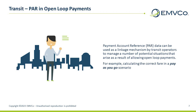Without the PAR data, the transit system would need to utilize other proprietary systems and processes to link the PAN provided at entry to the payment token provided at exit. Alternatively, the transit system may be unable to link entry and exit, which could lead, for example, to the transit rider being charged twice for the same journey. This use case shows how PAR data can be used as a linkage mechanism to simplify transit operator processing when a journey involves use of multiple linked payment credentials — for example, a contactless card, an NFC mobile payment app, and/or an NFC wearable with tokens all linked to the same underlying PAN.